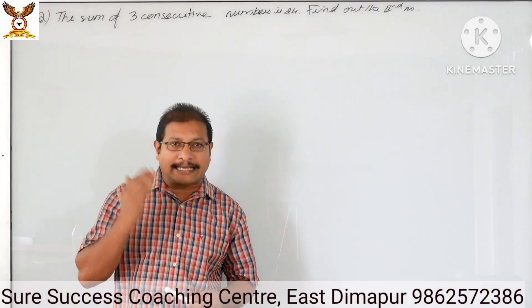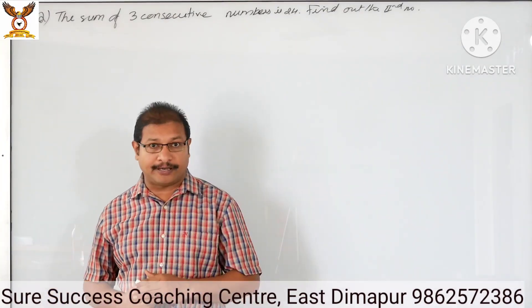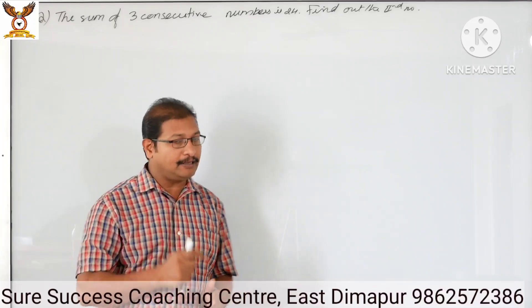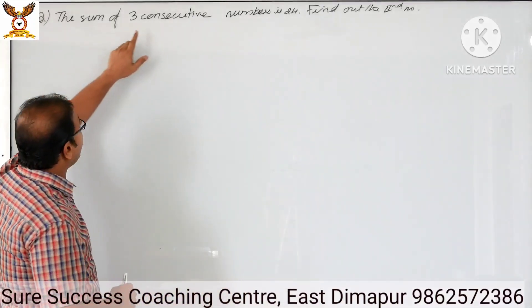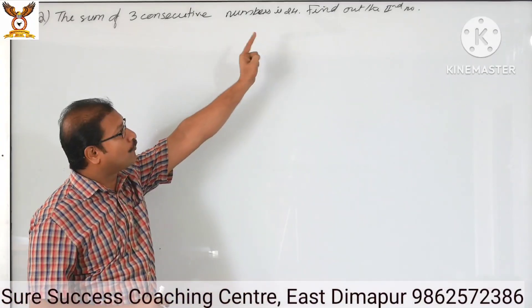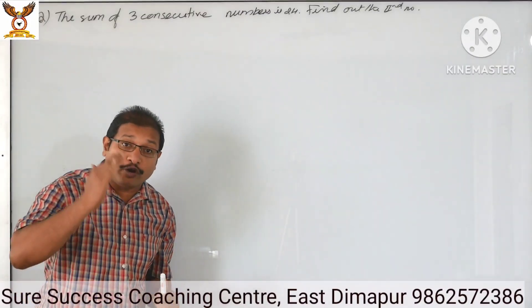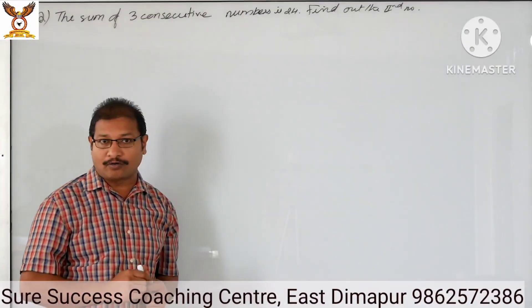Let's see the second question. I will read the question once. The sum of 3 consecutive numbers is 24. Find out the second number. The sum of 3 consecutive numbers is 24.